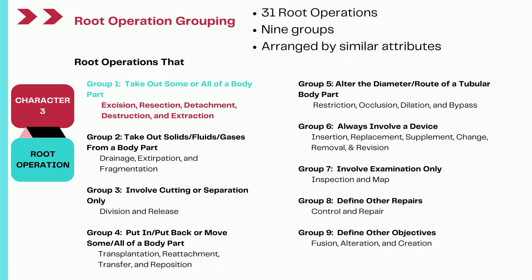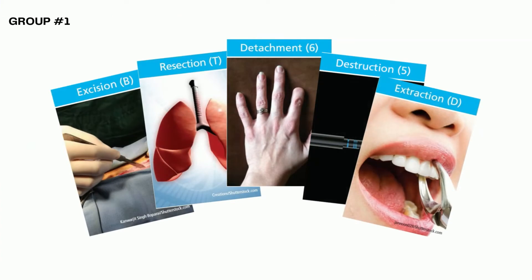Today we are looking at the first group, which talks about root operations that take out some or all of a body part. The root operations in this first group are excision, resection, detachment, destruction, and extraction — five root operations in total.